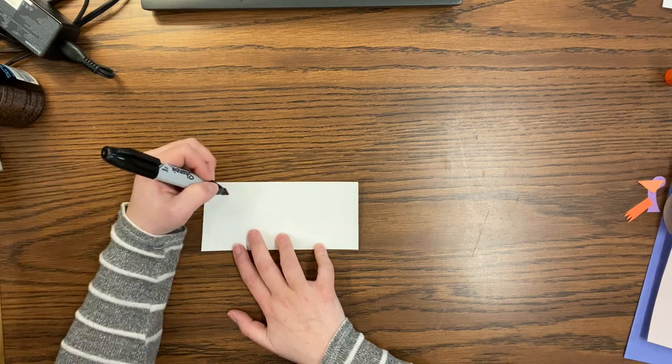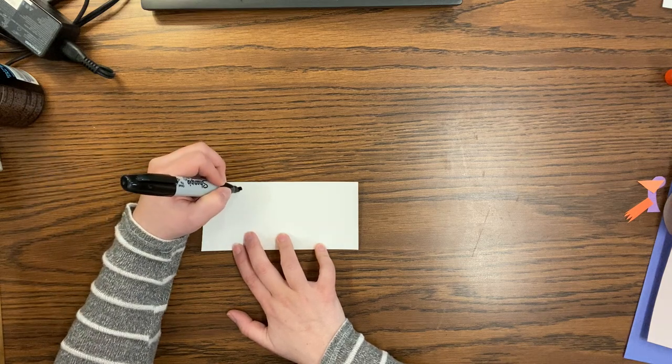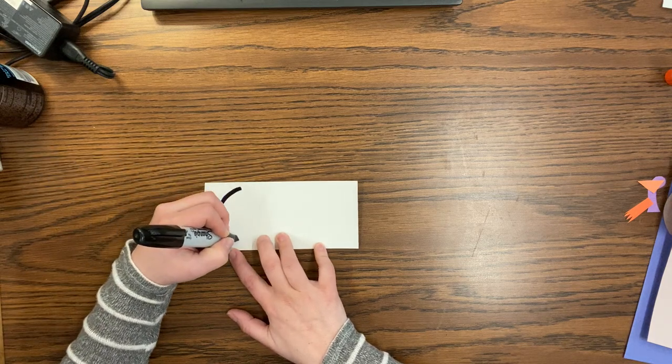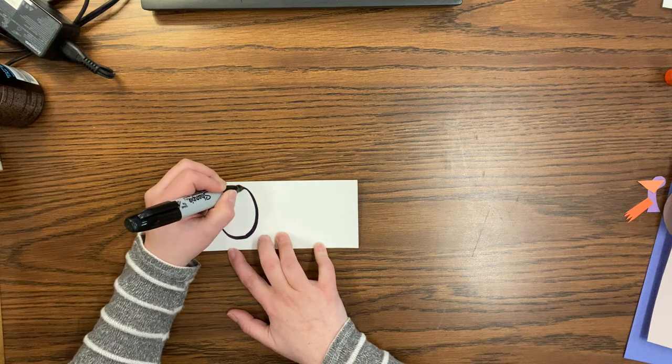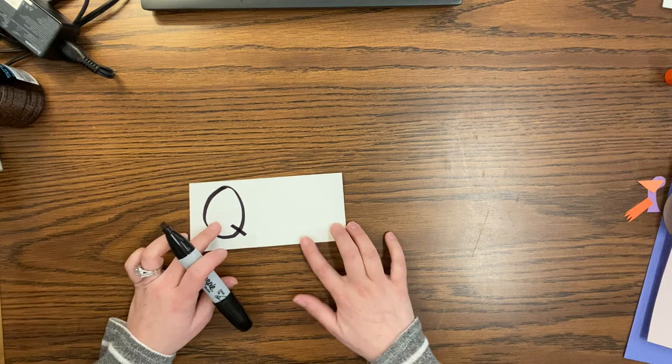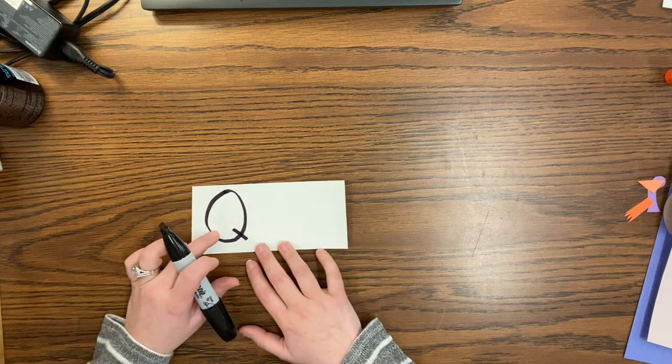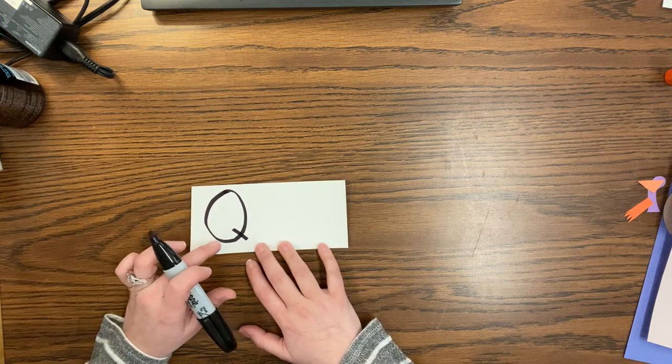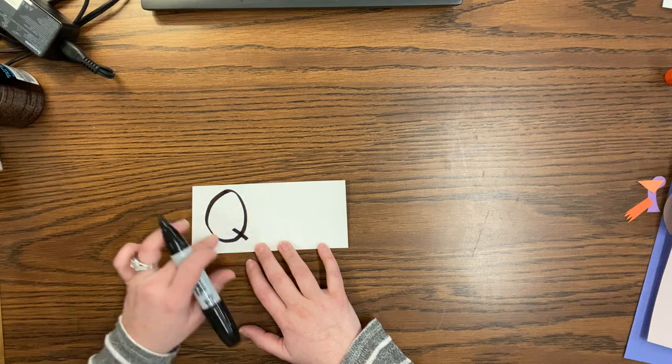Let's make an uppercase. Let's see, it's a big curve down, big curve all the way back up, and a little line. Do we know what letter that is? That is an uppercase Q. Queen, Q. That's an uppercase Q.